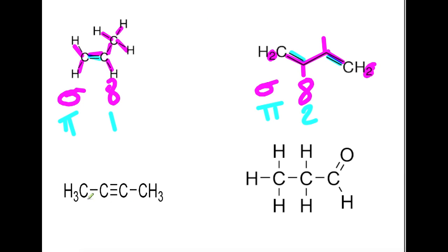In this example, we'll have three sigma bonds to the hydrogens, one here, and one of the triple bond will be a sigma — plus three more. So for sigmas we have nine sigma bonds. And then looking at the pi bonds, we have two — because we have a triple bond, we end up having two pi bonds.